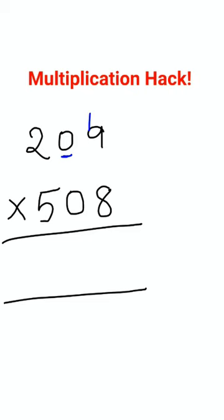Okay, so first what you do is just multiply this vertically. 9 into 8 gets you 72.